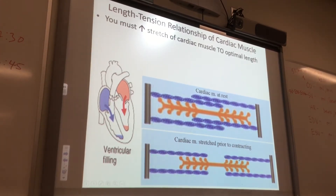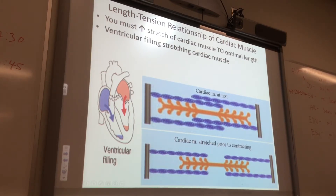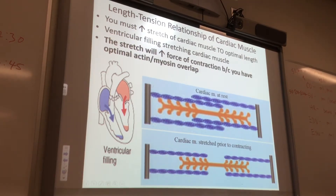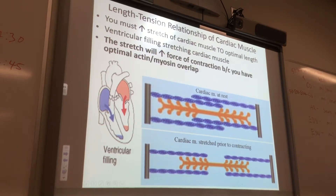The way your cardiac muscle stretches is: the ventricles fill up with blood, and that stretches the ventricles, which stretches the cells, which stretches the sarcomeres. Once you get this optimal overlap of actin and myosin, you can have an optimal force of contraction, which is what you want for your ventricle to eject that blood.